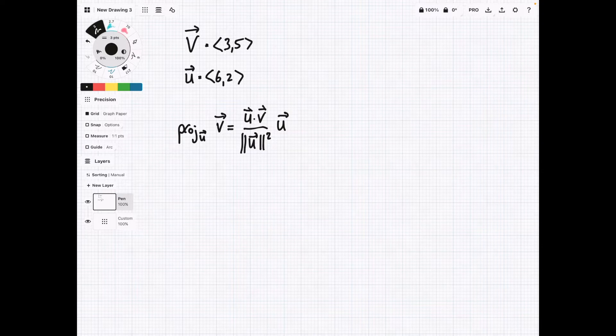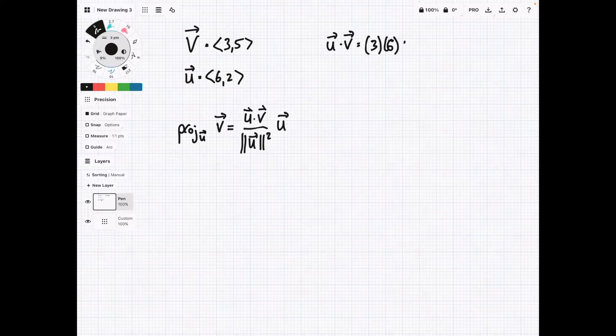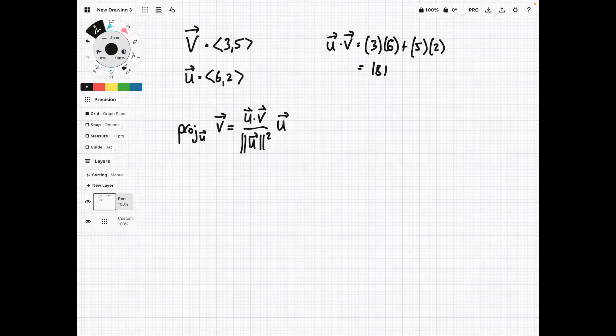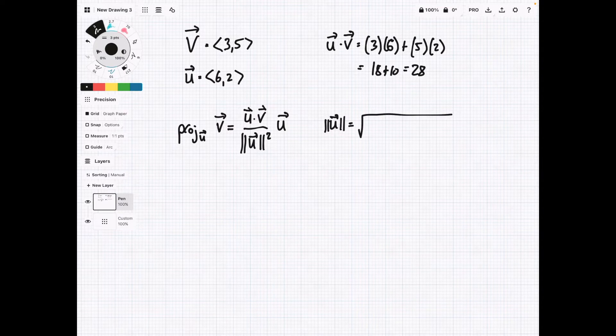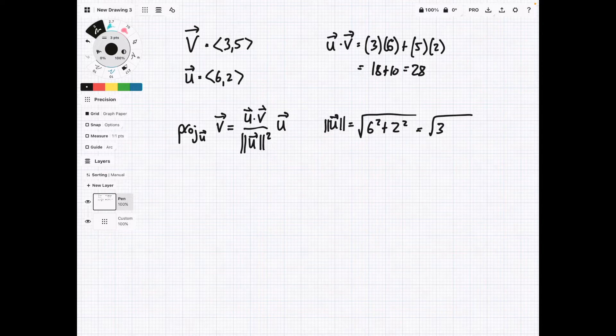Okay, so again, the process is going to be the same. Let's figure out what u dot v is first. So this is going to be 6 times 3 plus 5 times 2. This equals 18 plus 10 equals 28. Okay, now let's find the magnitude of u. So it's going to be 3 squared plus... Oop, I'm using the wrong one. We want u. So in that case, it's going to be 6 squared plus 2 squared. And this is going to be the square root of 36 plus 4, square root of 40.